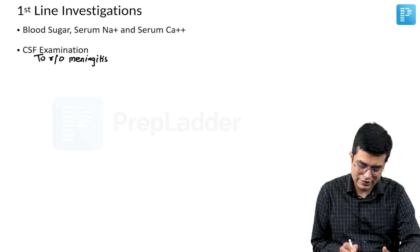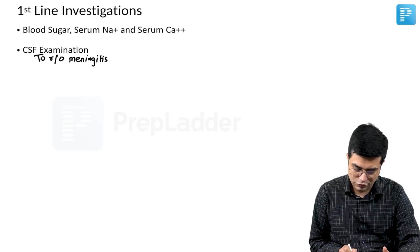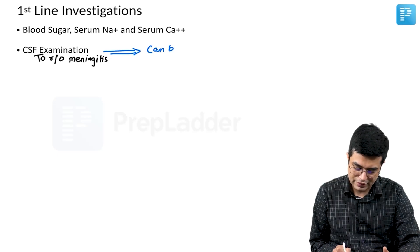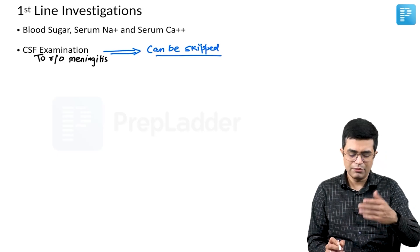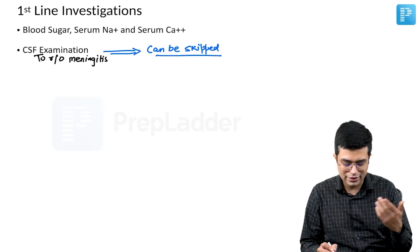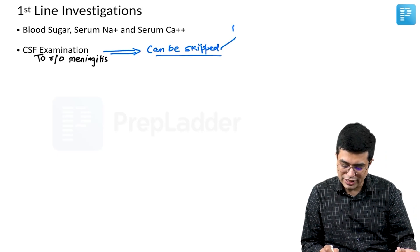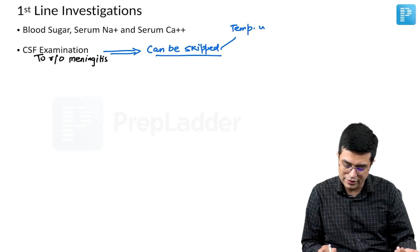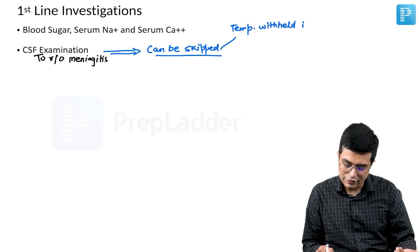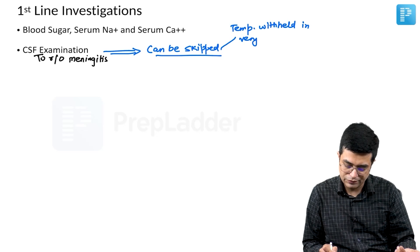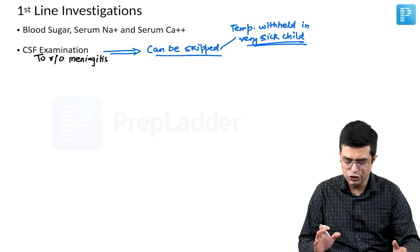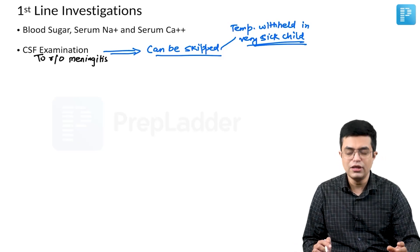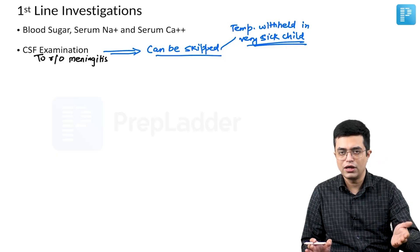According to AIMS protocol as well as Nelson, there are a few areas where CSF examination can be skipped. Where you are sure that meningitis is not there and the likely cause is something else. It can be temporarily withheld in case of a very sick child having severe cardiorespiratory compromise or just undergone resuscitation.